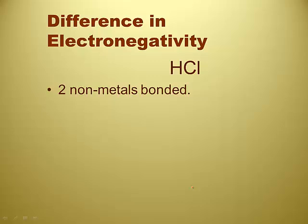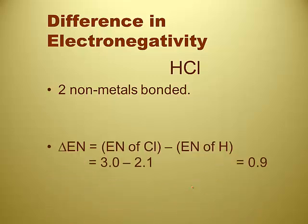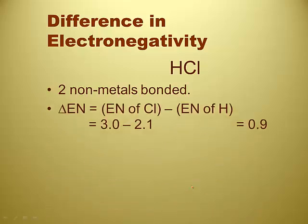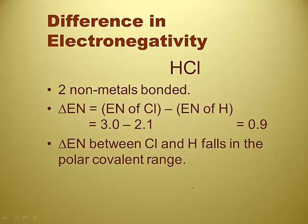Just look on your periodic table and check the electronegativity of hydrogen and chlorine. You find that the electronegativity of hydrogen is 2.1 and the electronegativity of chlorine is 3.0. You subtract the two to get a positive number and you get 0.9 — which falls in the polar covalent range. So I would label HCl as polar covalent.